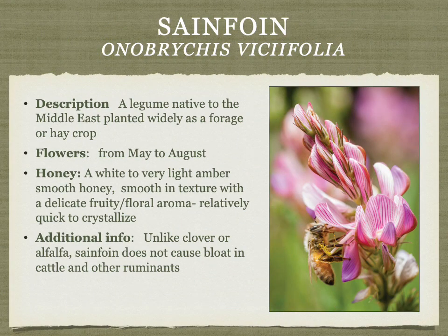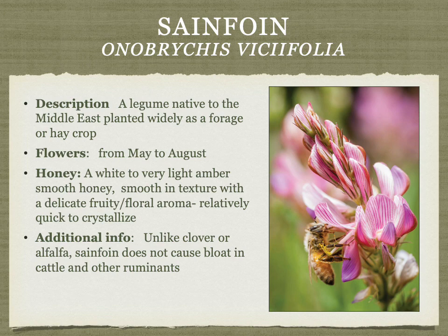Sainfoin is a legume planted as forage or hay. It's a wonderful crop — unlike clover or alfalfa, it does not cause bloat in cattle and other ruminants. The honey is white to very light amber, smooth in texture, with a delicate fruity floral aroma. Sainfoin isn't planted as much as alfalfa because it doesn't tend to regrow for second and third cuttings, but once established it can live for decades and is less dependent on irrigation.